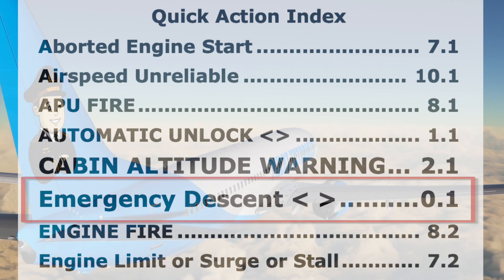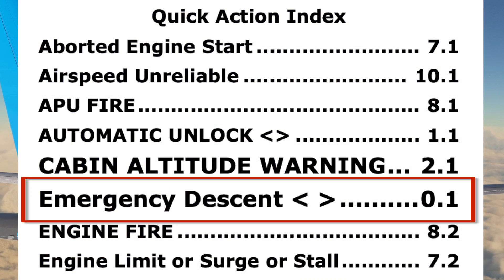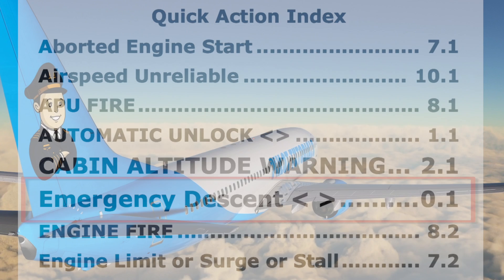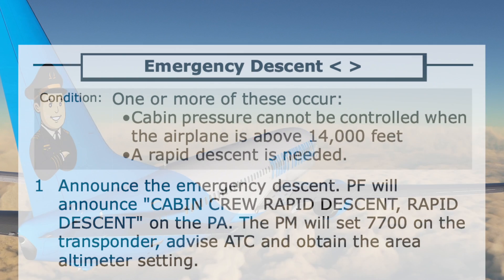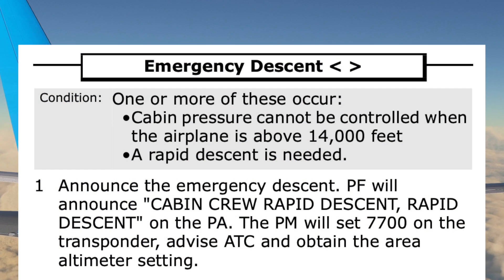After checking the QRC where applicable, the emergency descent checklist is quickly found on the Quick Action Index of the QRH. The pilot monitoring quickly reads the checklist title, states the conditions, and shows the pilot flying the checklist.